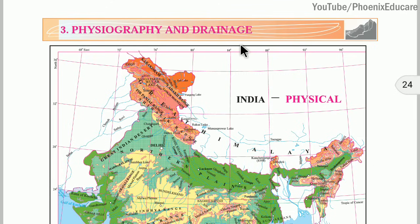Physiography means what are the different landforms that are available in the country. In one country, there are different landforms like mountains, plateaus, plains, and islands. Drainage means rivers or lakes that are found in that country. We will see the different landforms and river systems found in India and Brazil.